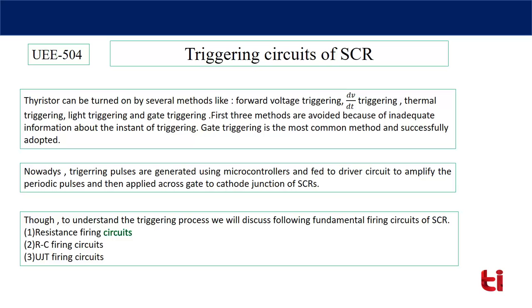Nowadays microcontrollers are frequently used to generate the triggering pulses, and those pulses are amplified using a driver circuit. After that the amplified pulses are applied across the gate-to-cathode junction of the SCR. To understand the basics of the triggering process we will go through fundamental firing circuits: resistance firing circuit, resistance-capacitance firing circuit, UJT, and transistor firing circuits.